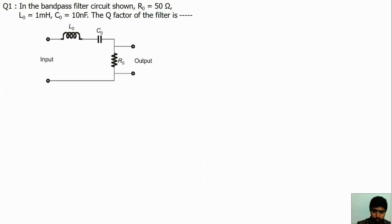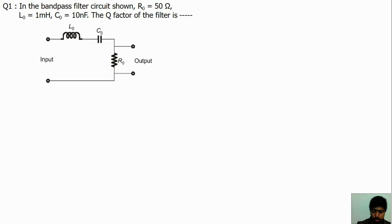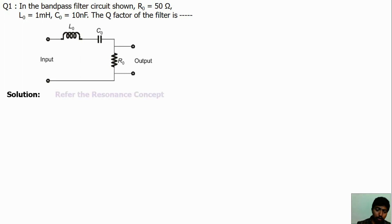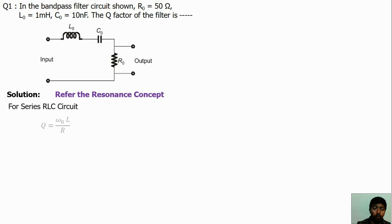Now we will solve the first question. This is the series RLC circuit because R, L, and C are connected in series. We have to find the quality factor for the circuit. For series RLC circuits, the quality factor formula is Q equals ω₀L divided by R, where ω₀ is the angular frequency in radians per second, L is inductance, and R is resistance.